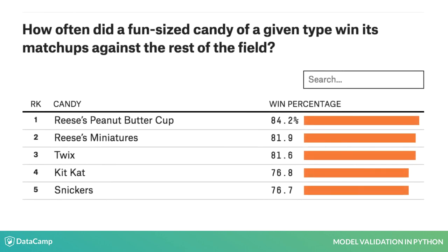Throughout this course, we will use 538's Ultimate Halloween Candy Power Ranking dataset several times. This dataset contains 85 different candies, data on their various characteristics, and a column specifying how often that candy was selected in a head-to-head matchup with other candies. This column is a win percentage and contains values between 0 and 100.